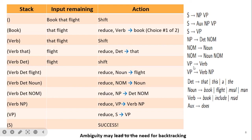One correction to note: the grammar gives VP → Verb and VP → Verb NP. When Verb is pushed onto the stack, there is no need to immediately convert it to VP, because VP → Verb alone has only one symbol on the right-hand side. We should wait to search for the pattern Verb followed by NP before applying the VP reduction.